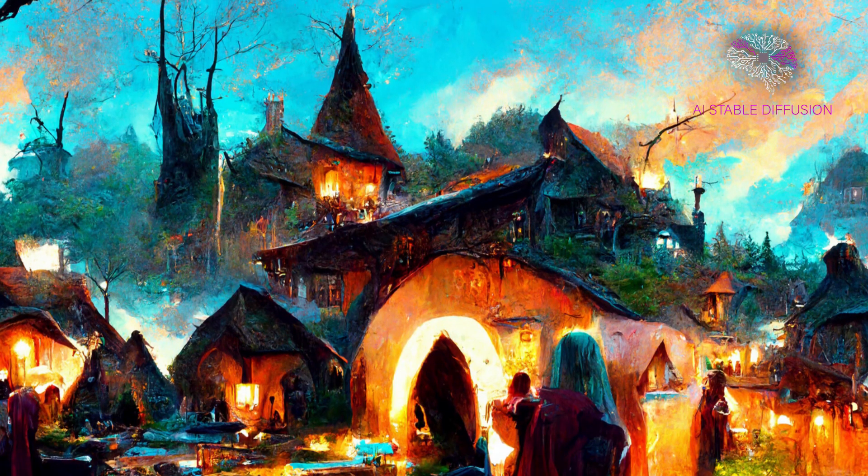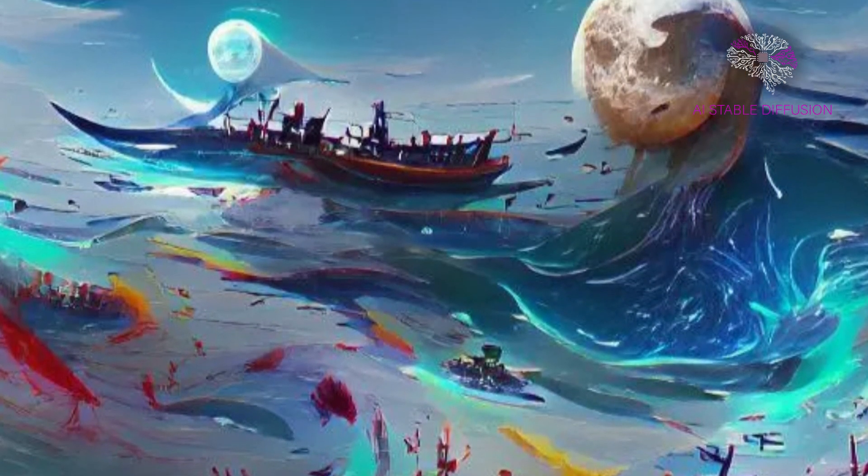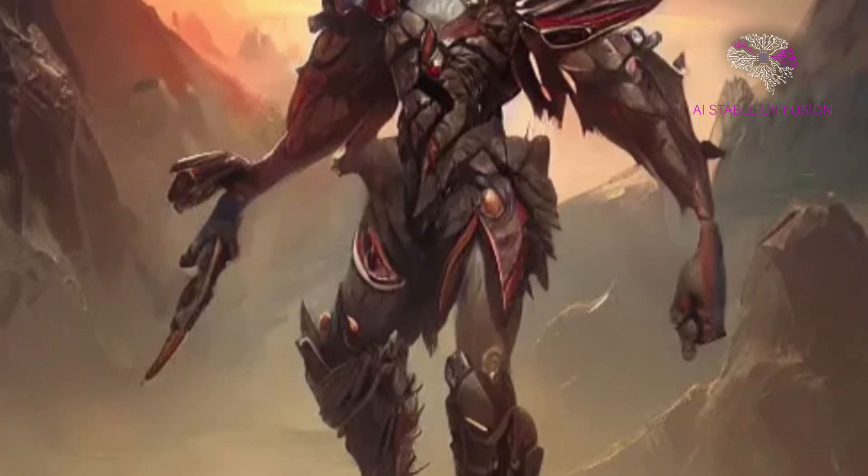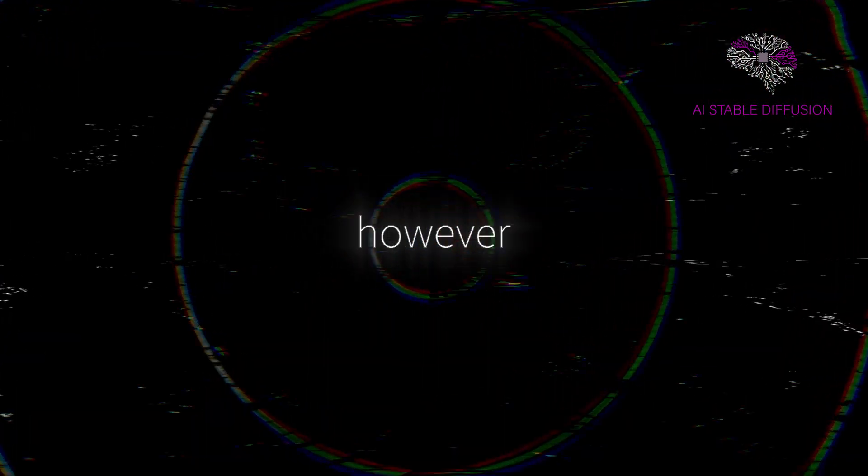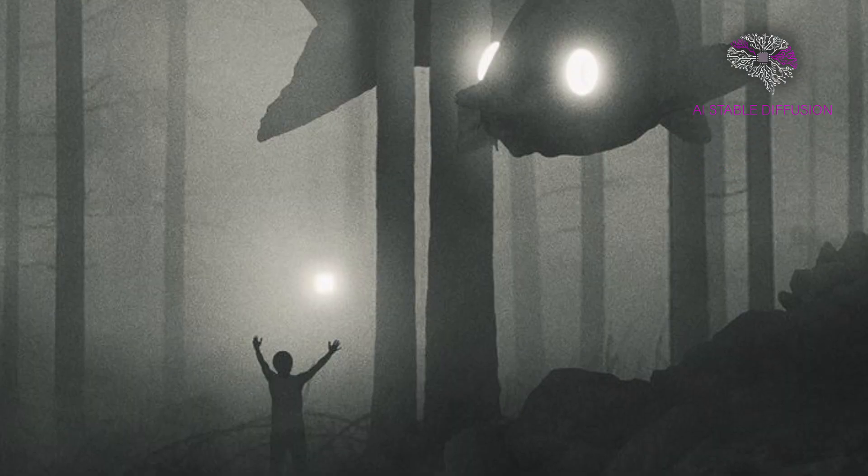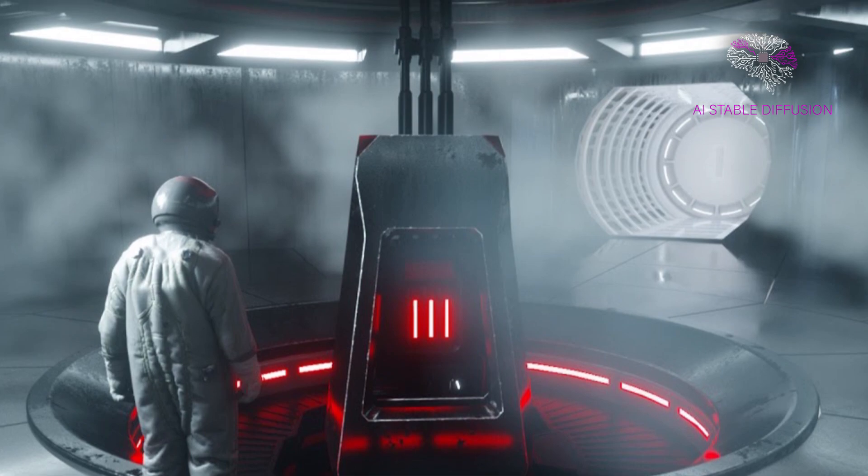Last but not least, you can add trending on artstation for a more artistic image or Unreal Engine for more realistic lighting to your prompts to make it appear more like what you want. Anything can be added. However, illustration, digital paint, dark, gloomy, and octane rendering are a few examples of the most beautiful image effects.